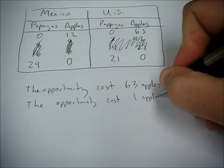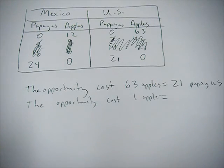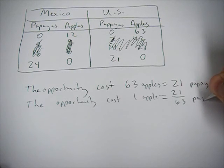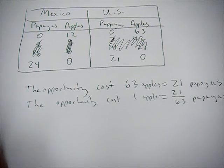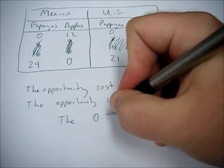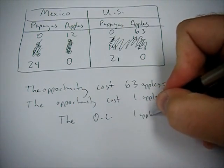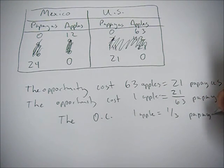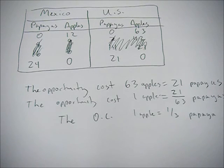So write the same line over again: the opportunity cost of one apple. In order to get this we need to divide both sides by 63, so it's 21 over 63 papayas. What is 21 over 63? Well, 21 over 63 is one-third, so we get the final answer of the opportunity cost of one apple is one-third of a papaya.